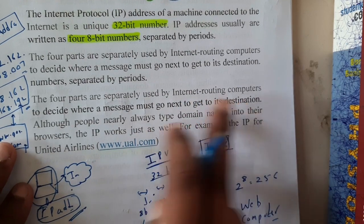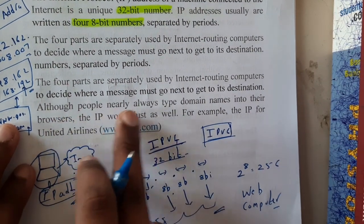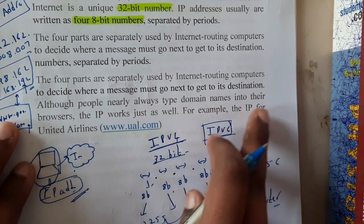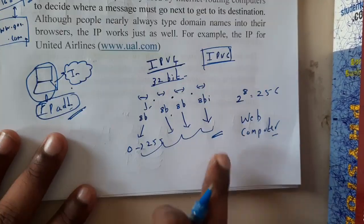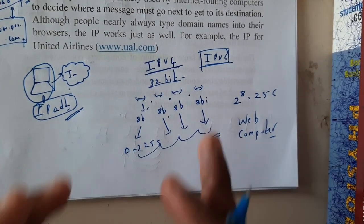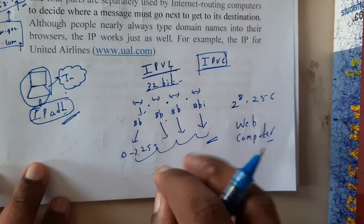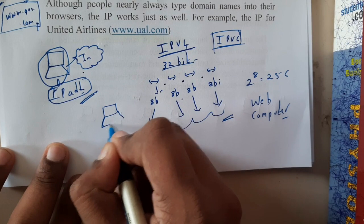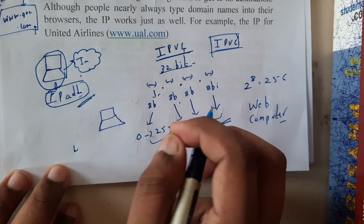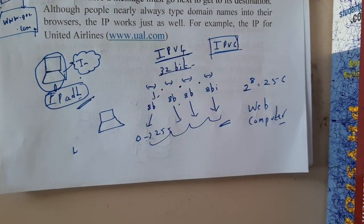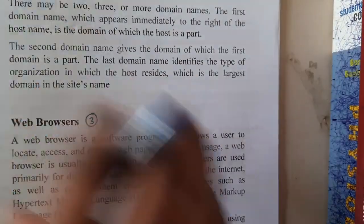Although people nearly always type domain names instead of IP addresses in the browser, every website will be having its own IP address. If you want, you can go to Google and type 'what is the IP address of Google' and you'll get it. Or if you want to know your own system's IP, type 'what is my IP' in Google and it will automatically show you your IP address.